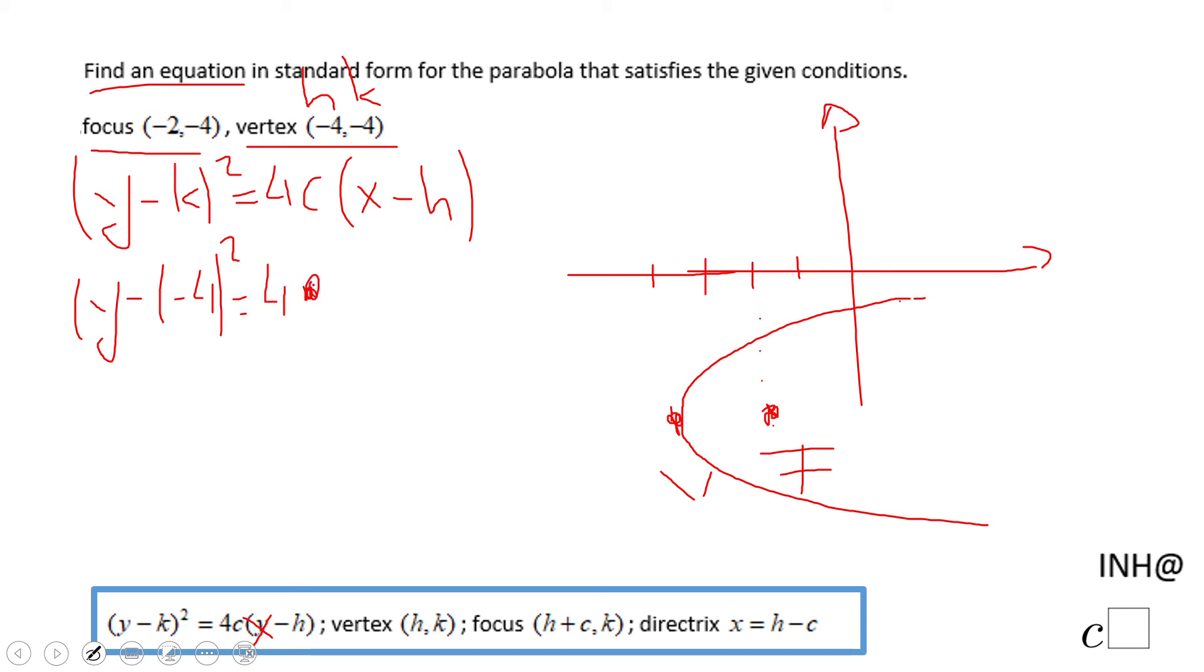It's very important c. c is the distance from the vertex to the focus, which in this case is 2, right? And like I said, it's positive because this parabola is open to the right.